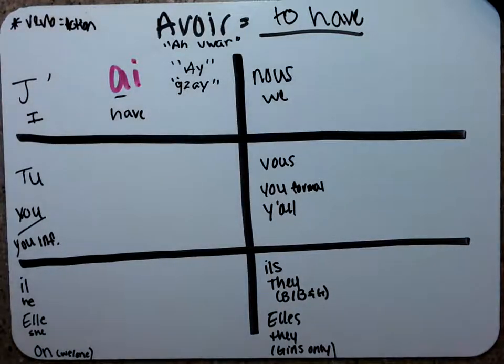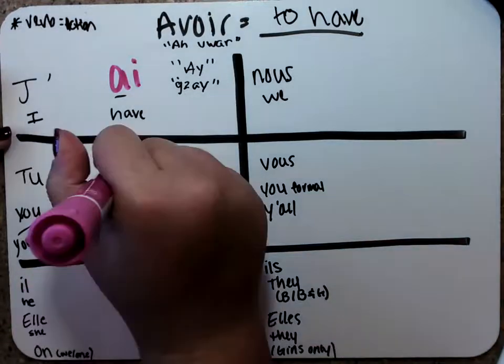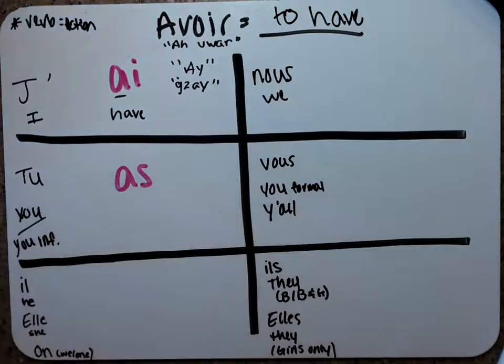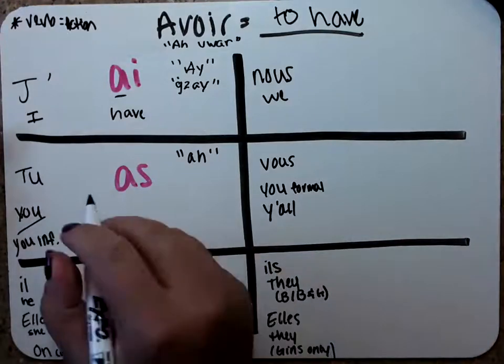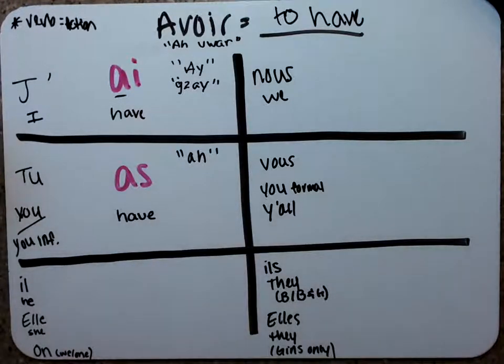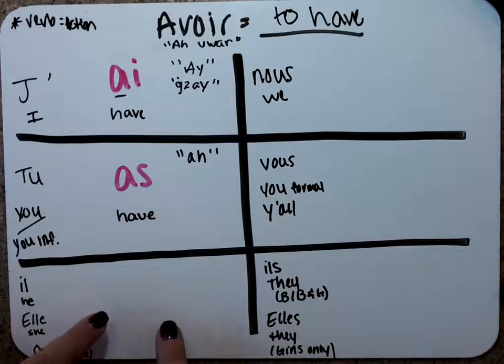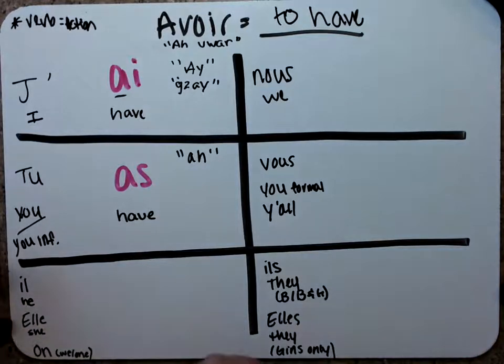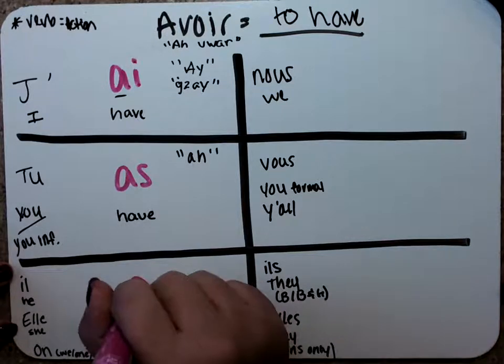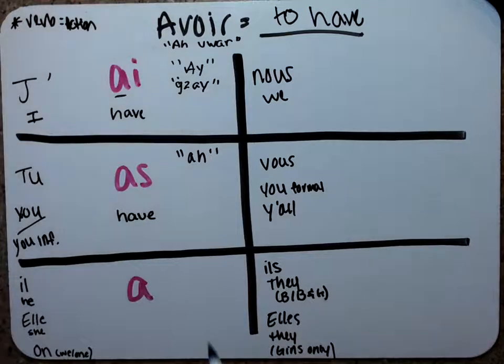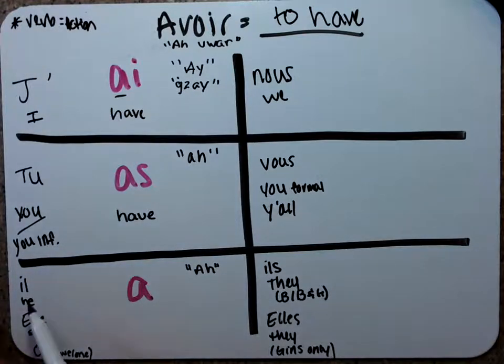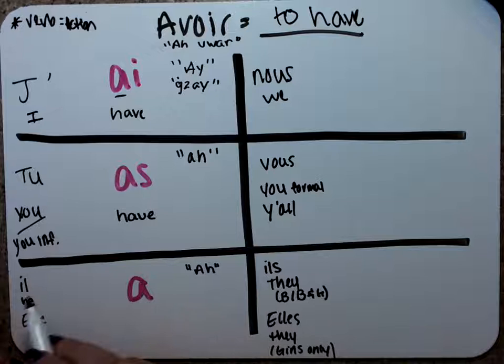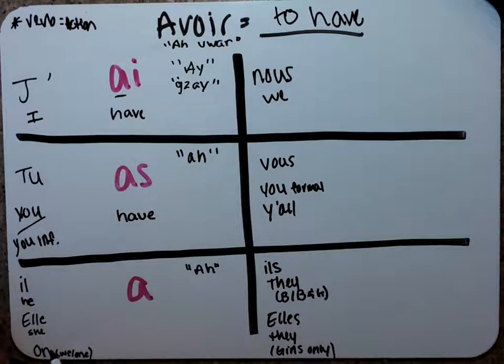Next verb that we have or the next form that we have is tu and we're going to say as, A-S. Tu as. And so tu as means you have. Next is il, elle, and on. And the reason that these are all in the same box is because they all have the same form. So il, elle, and on get a. So these two are pronounced the same. So this is ah as well. So il, elle, and on all get the same one. And it means he has, she has, and we or one have.